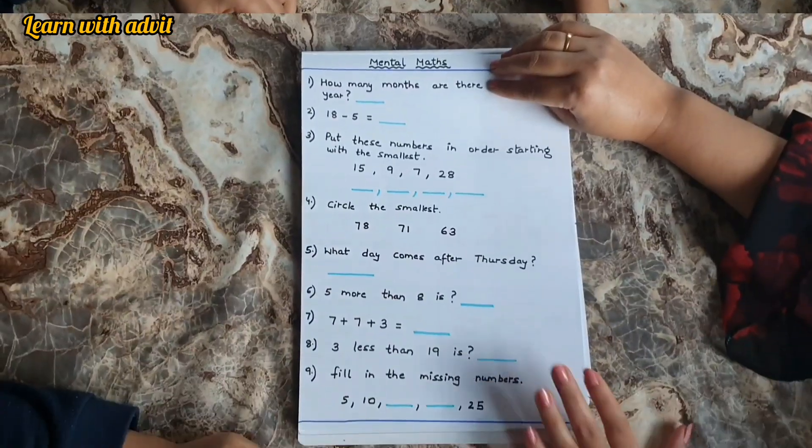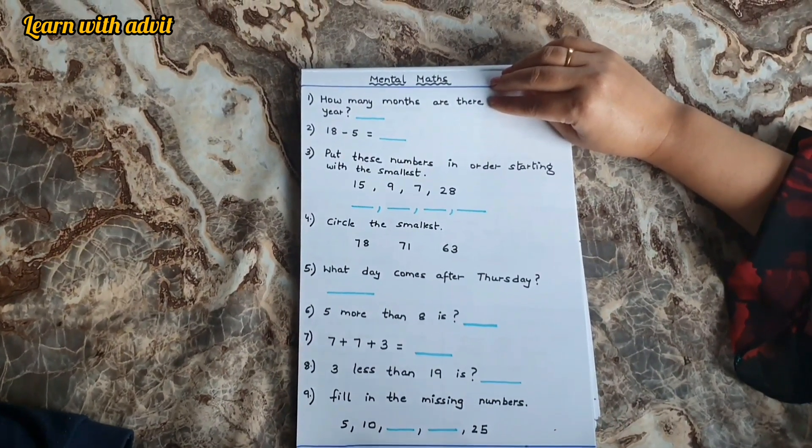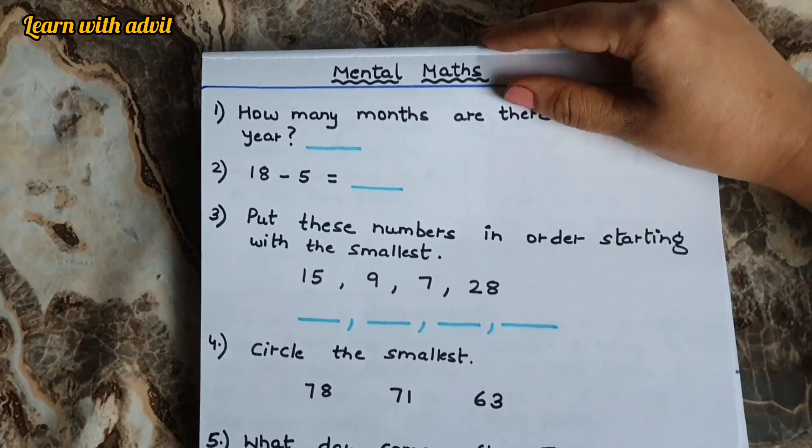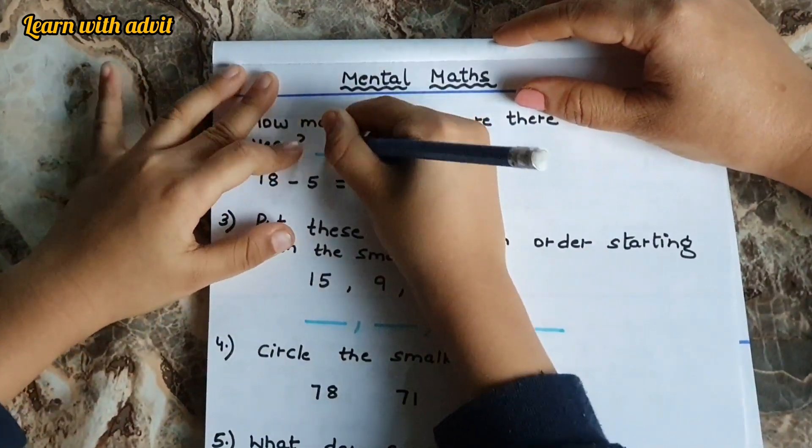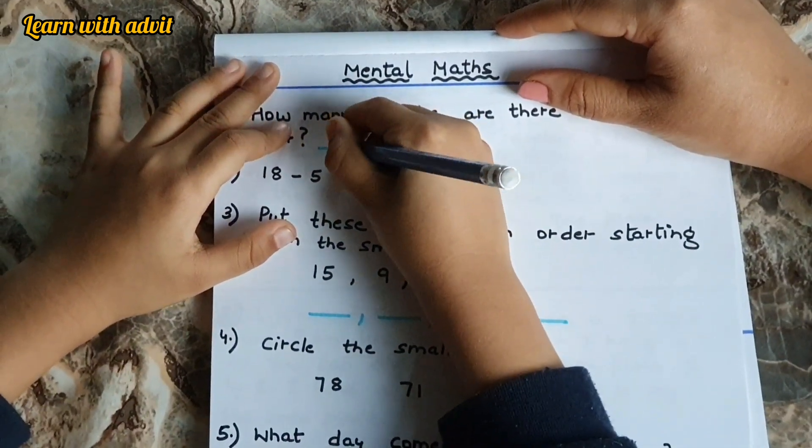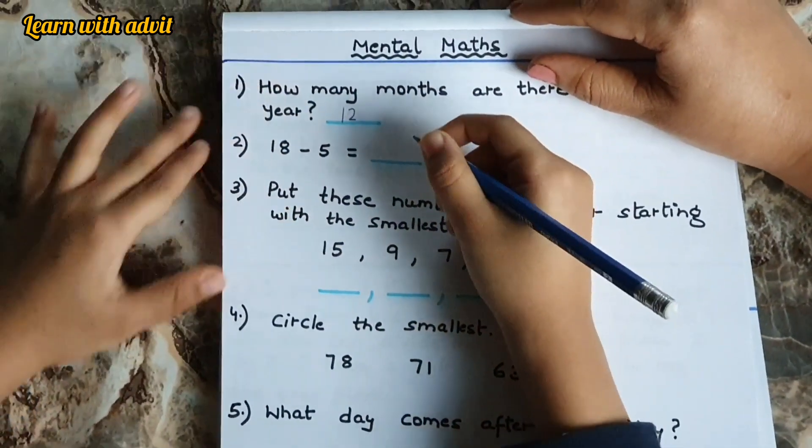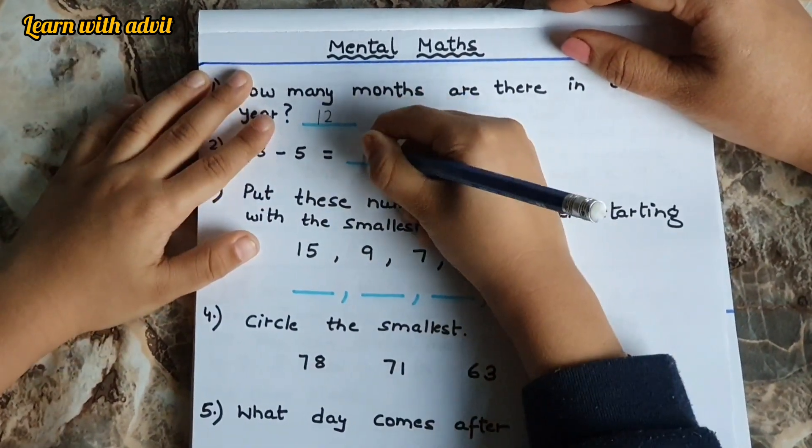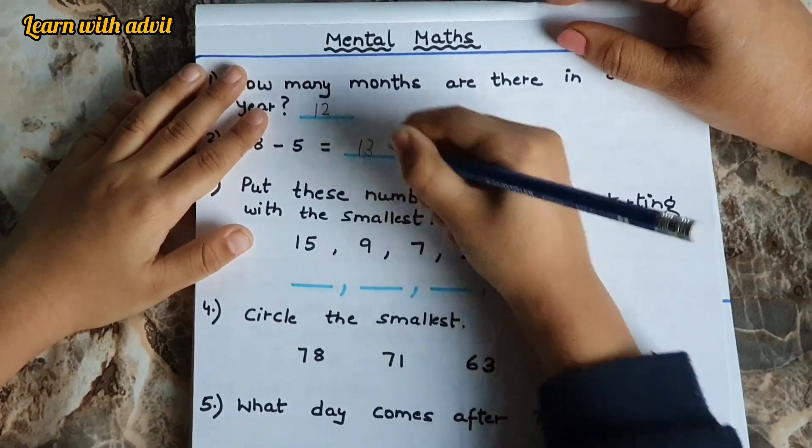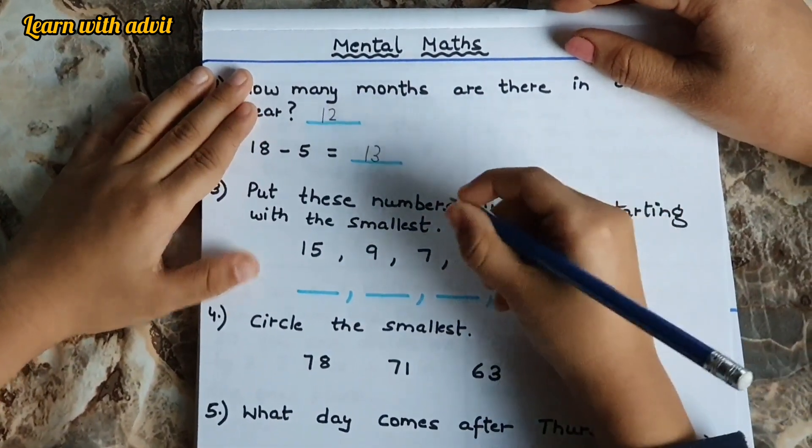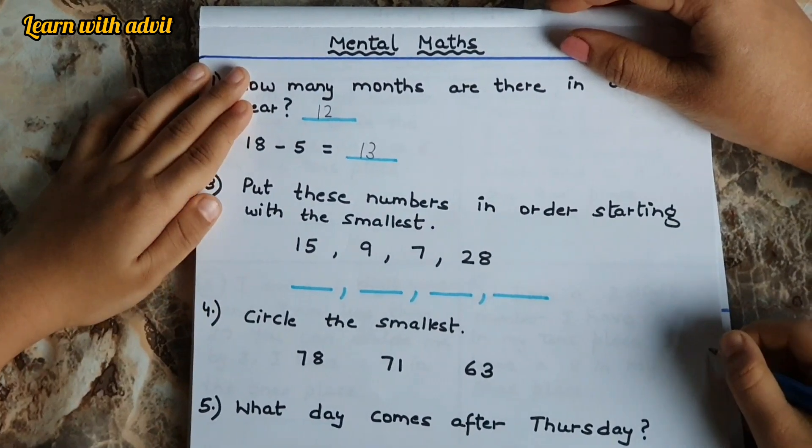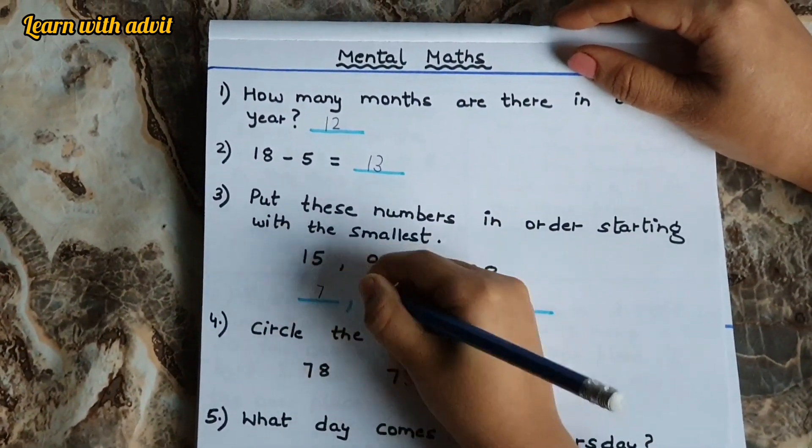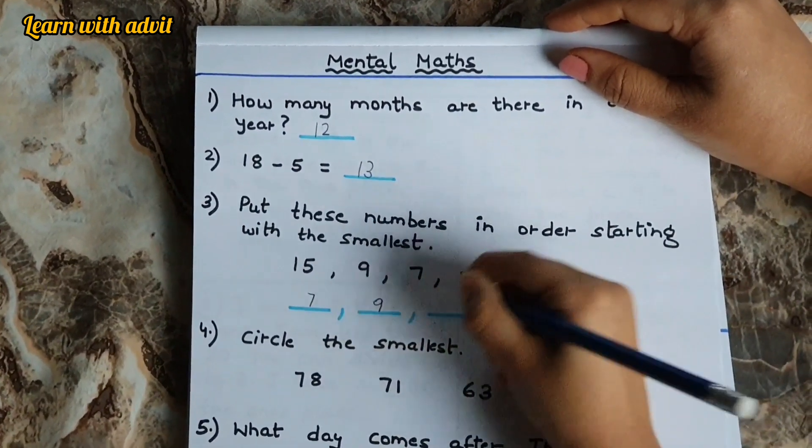Very good. This sheet is for mental maths. You have to solve in very quick. How many months are there in a year? Twelve, write it down. Eighteen minus five is thirteen. Put these numbers in order starting with the smallest.